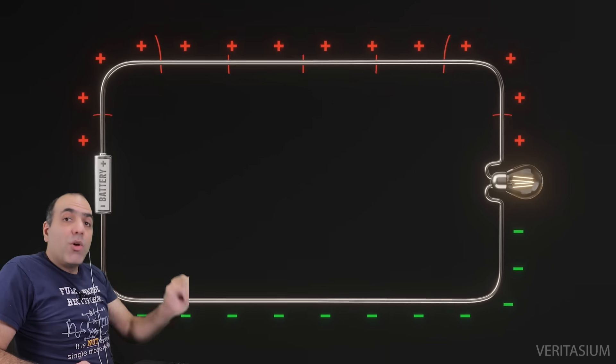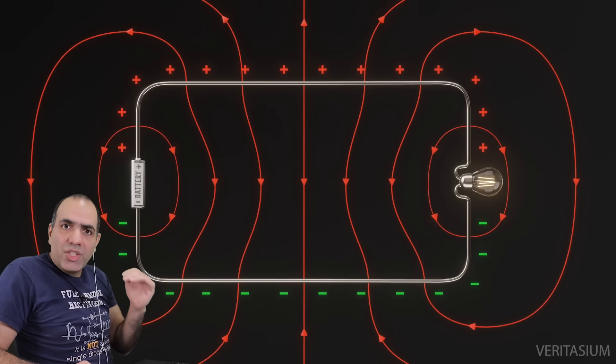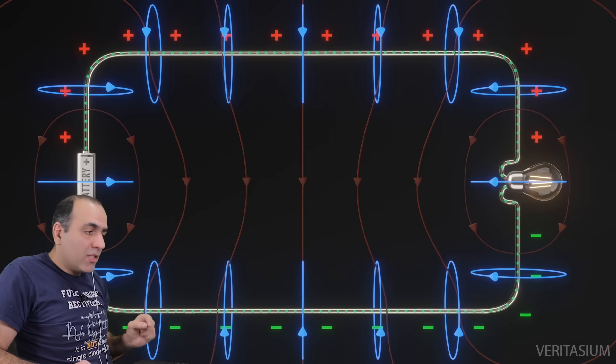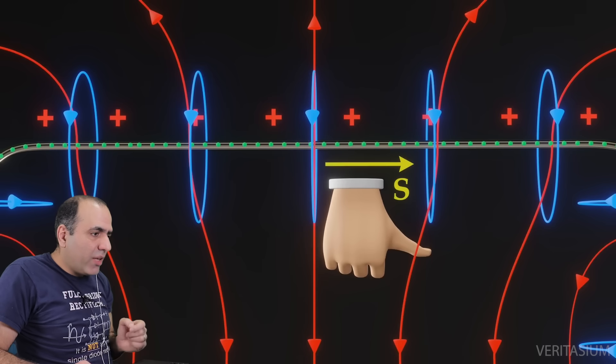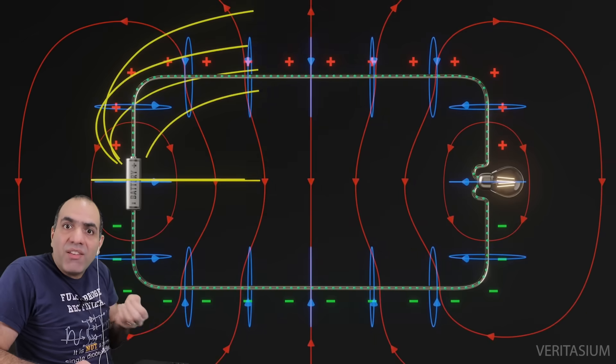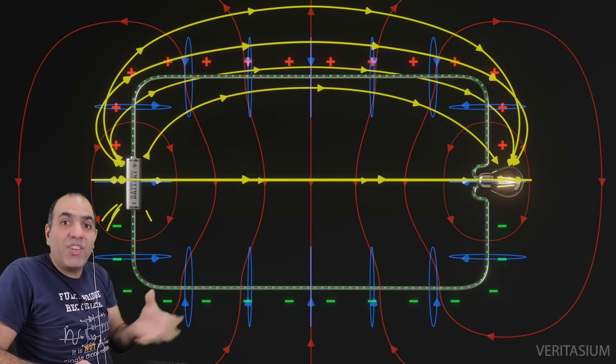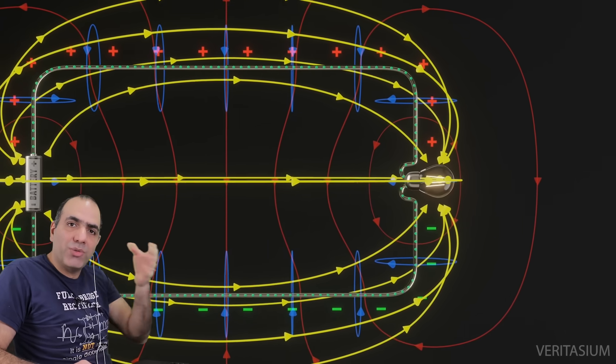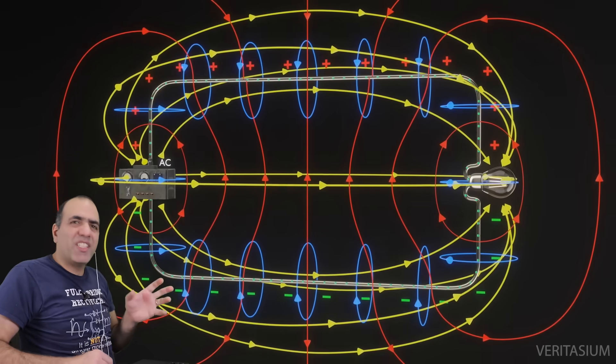So Derek shows that in a closed loop of a circuit, where we have electric fields between the wires and magnetic fields around the wires, according to the Poynting vector, the electrical energy in fact flows in the space around the wires by the electromagnetic fields from the source to the load, which is true.